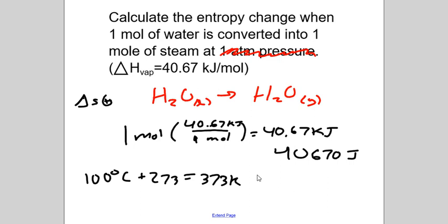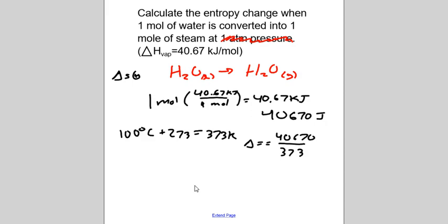And we know what the temperature of this is because it's liquid water changing to gaseous water, which happens at 100 degrees Celsius. So add 273 to that gives us 373 K. So Q minus T or Q divided by T delta S equals 40,670 over 373. Oh, that's supposed to be an S right there. Delta S equals, so that means delta S in this case, equals 109, and that's going to be joules per degree Kelvin. So like we predicted, this is a positive value here.